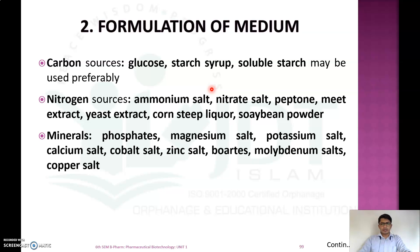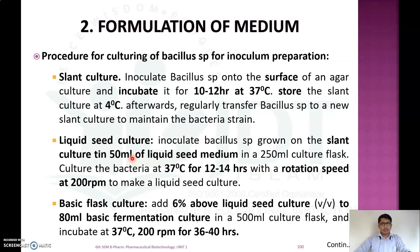The second step is formulation of culture media. The media should contain all necessary nutrients required for production of the enzyme. For catalase production, carbon sources used are glucose, starch syrup, and soluble starches. Nitrogen sources include ammonium salts, nitrate salts, peptone, meat extract, yeast extract, corn steep liquor, and soybean powder. Minerals include phosphate, magnesium, potassium, calcium, cobalt, zinc, borate, molybdenum, and copper salts.